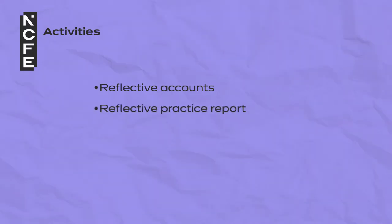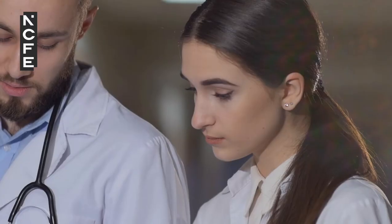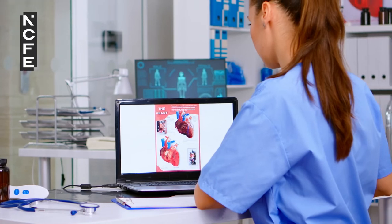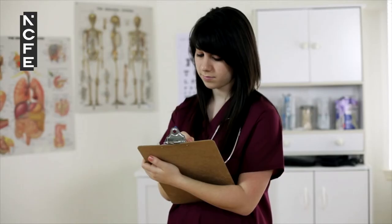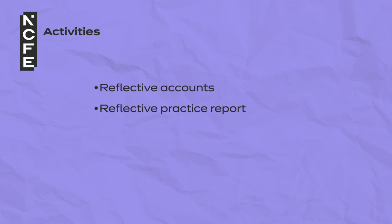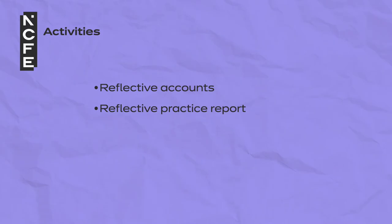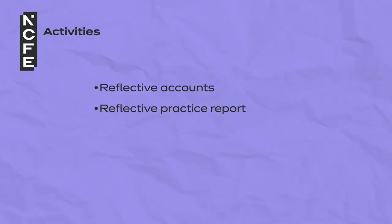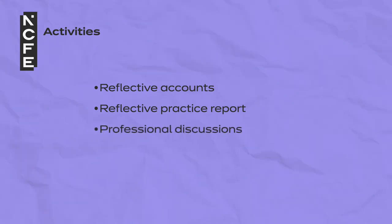Reflective practice report: students could write a reflective practice report in which they are given a topic to reflect on their performance. This could be related to a task completed within their placement, practical activities completed within a simulated environment, or a task completed within a class. Students should research and use a model of reflection such as Kolb's experiential learning cycle 1984 or Gibbs' reflective cycle 1988 to follow the steps to reflect on their performance.